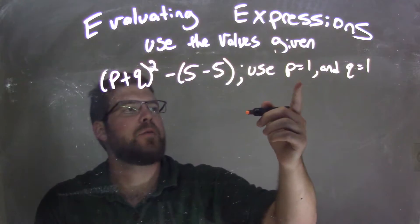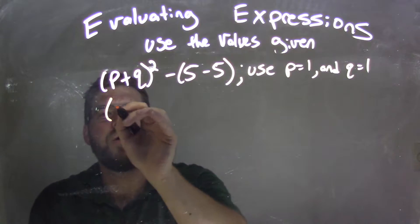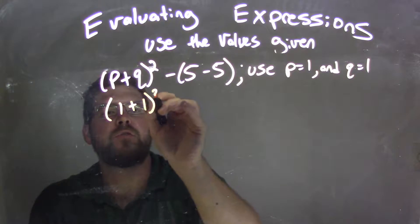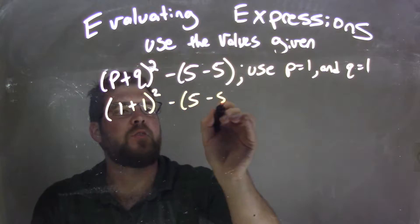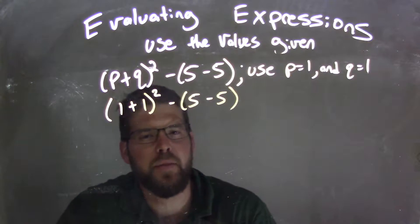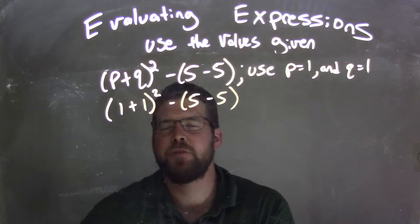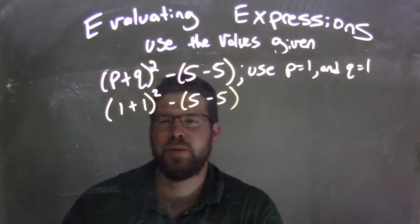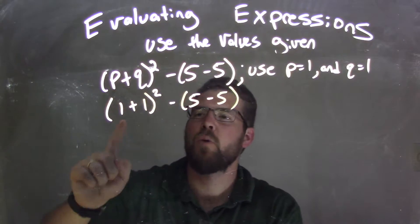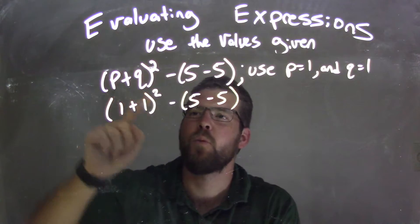So we substitute p equals 1 and q equals 1 here. 1 plus 1 squared minus 5 minus 5. And this time I'm actually not going to put the parentheses around the ones. I thought that maybe with ones and parentheses it might have been a little more difficult, but this 1 corresponds with that p and this 1 with that q.